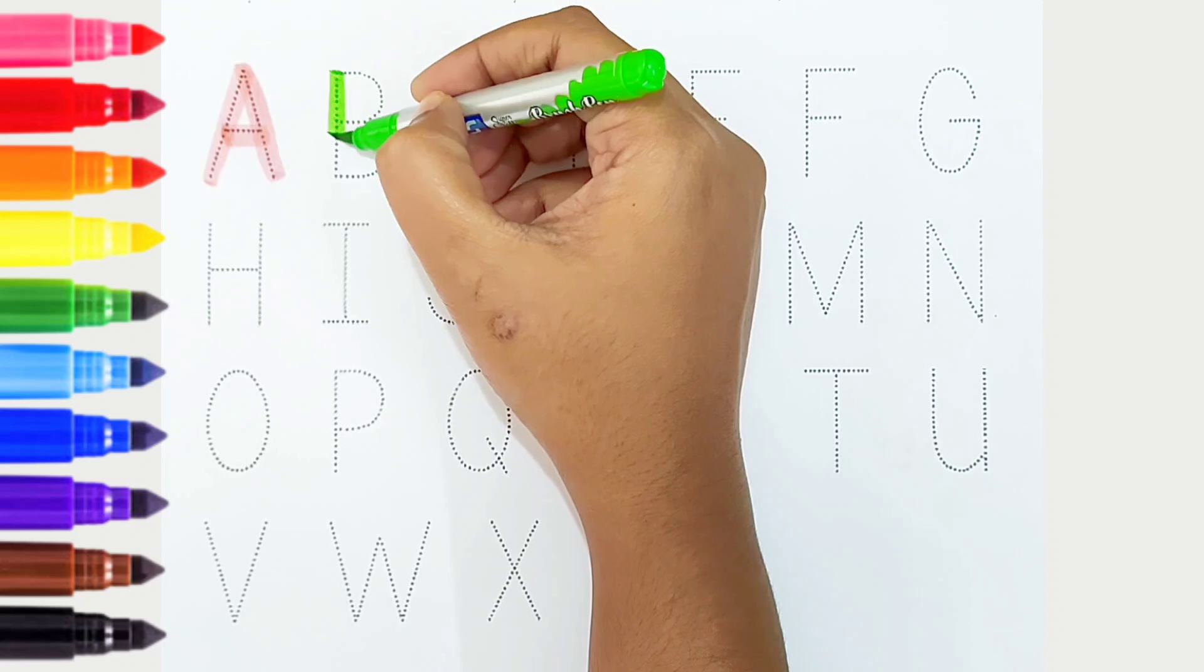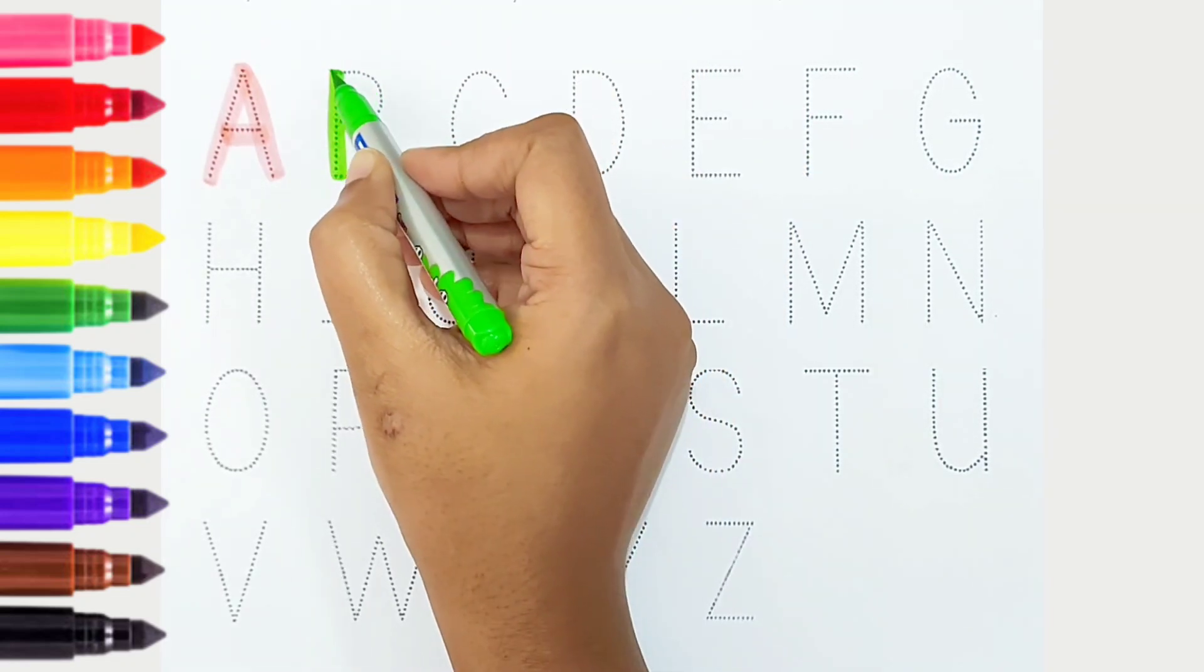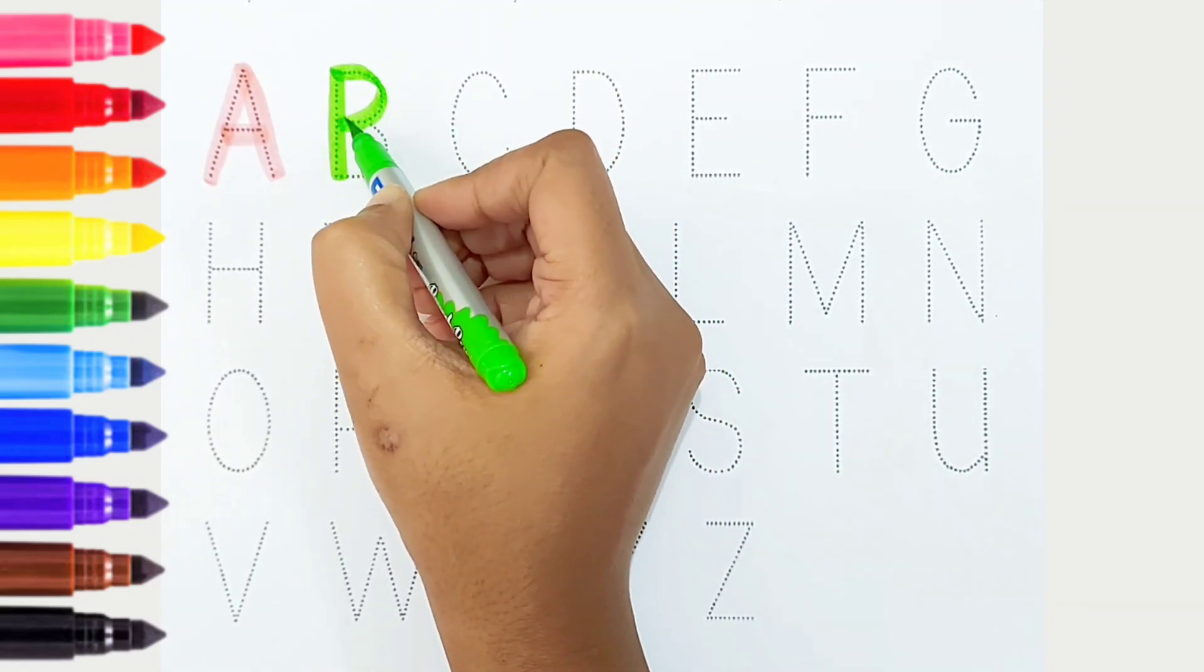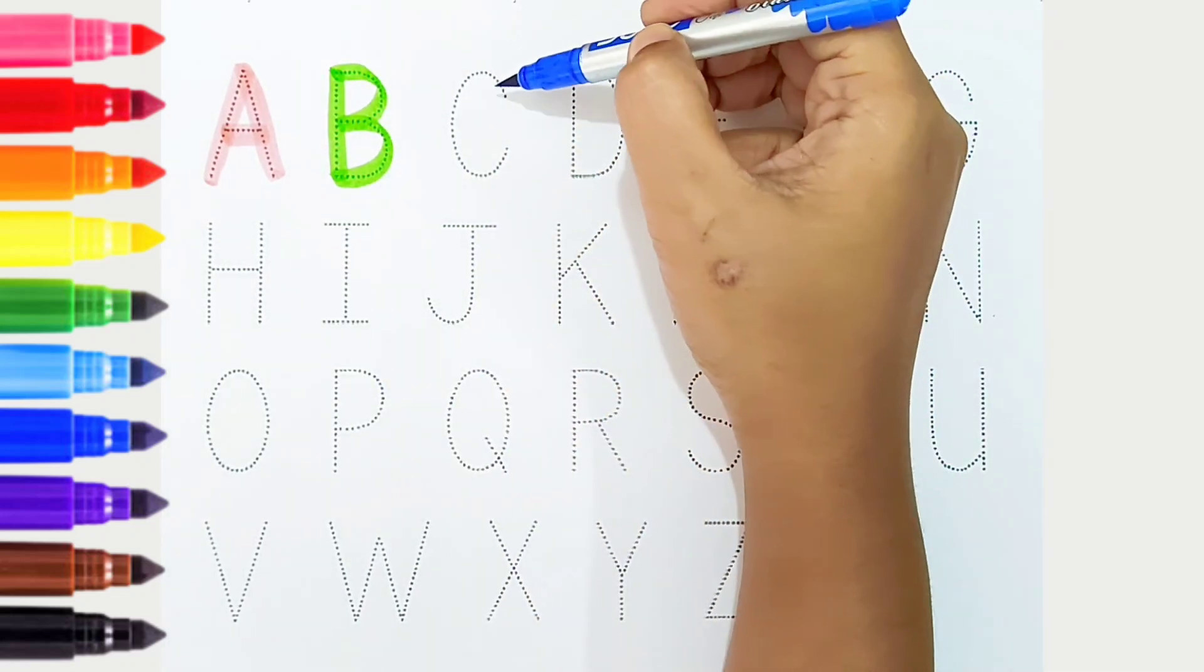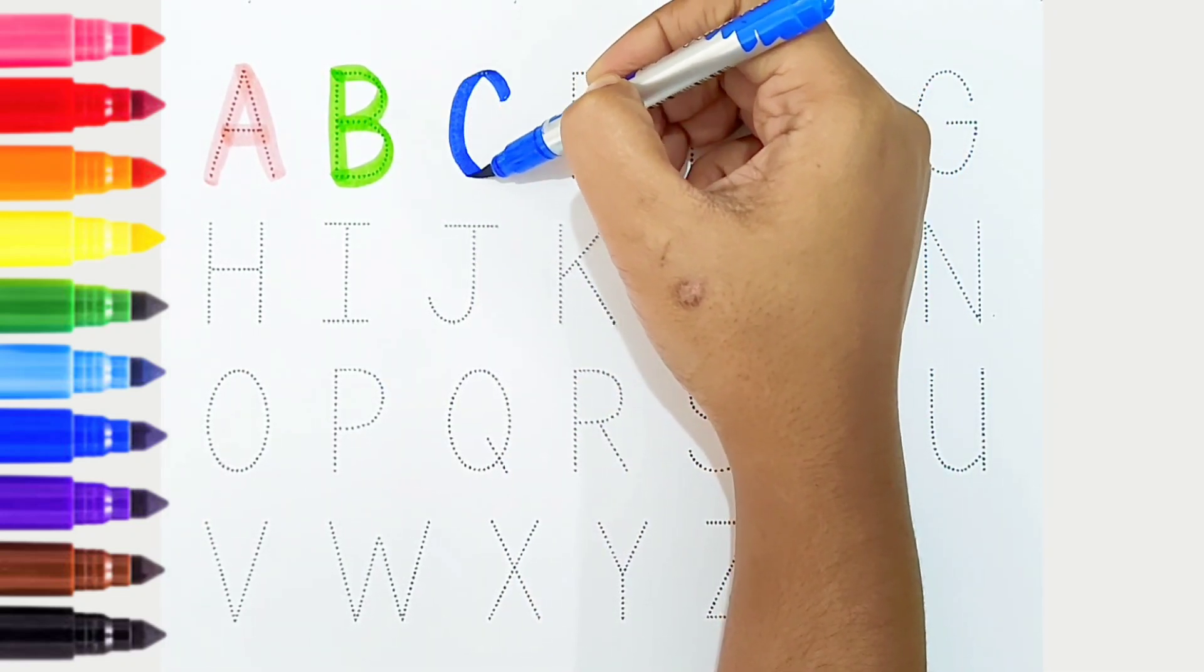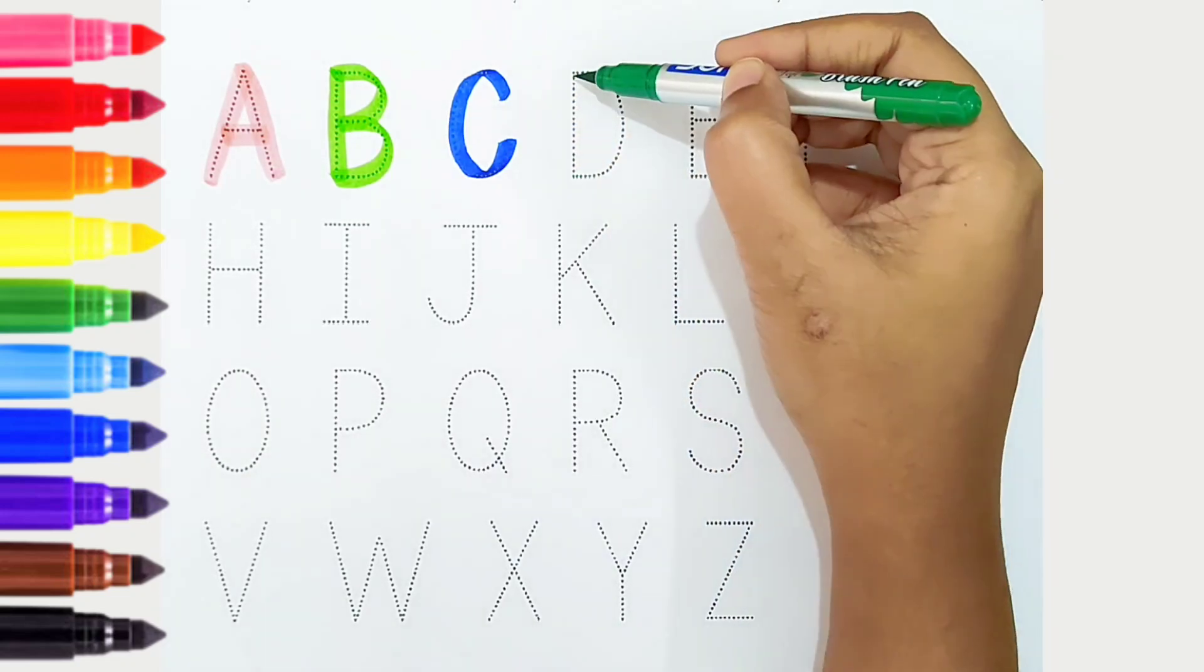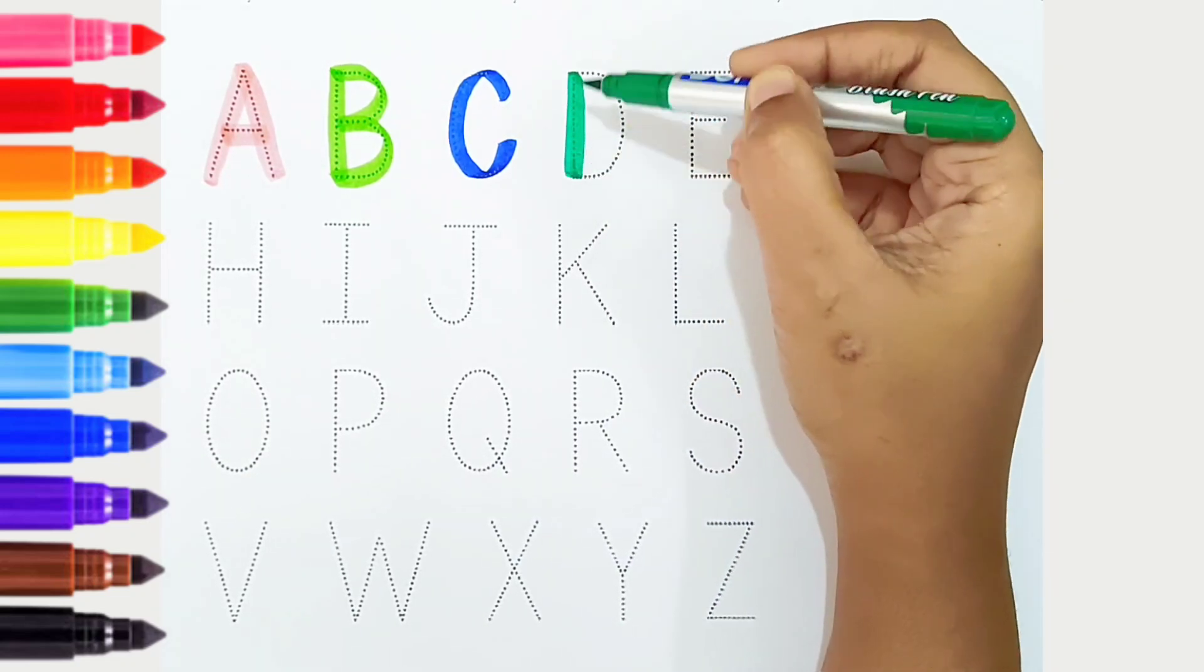B, light green color. B is for balloon. C, dark blue color. C is for candy. D, dark green color.